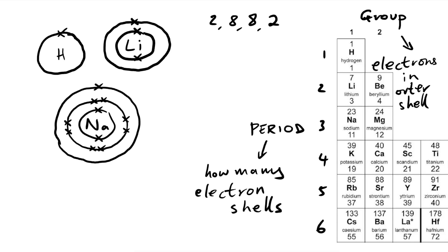All of these are in group one but they are in different periods, so they have the same number of electrons in the outer shell - one - but that outer shell is a different distance away from the nucleus at the center because you have the other shells in between.